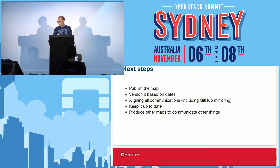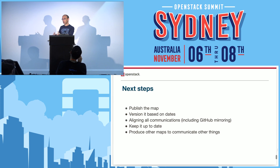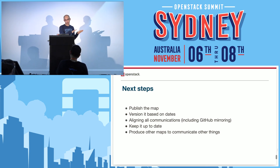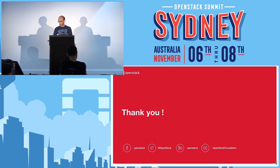Finally, we'll keep it up to date. We'll produce other maps to communicate other things. The goal is not to communicate everything using a single map, but to design other maps to better align with what we've been discussing about constellations this week — a particular way of navigating that map. Don't try to overload the existing map. Keep it as simple as possible — it's complex enough already. Produce other maps to say other things, like where Kubernetes plugs into it. Thank you all for listening. If you're interested in the map, you'll see it appearing on the OpenStack website pretty soon.